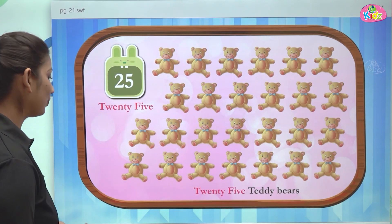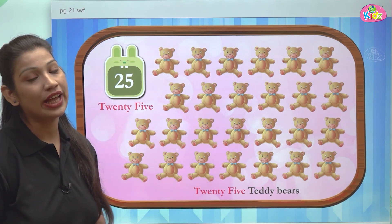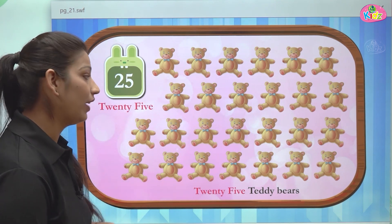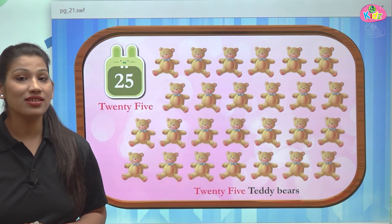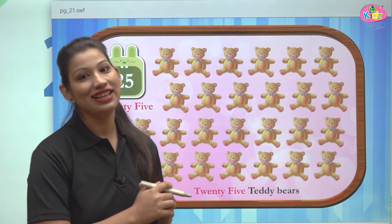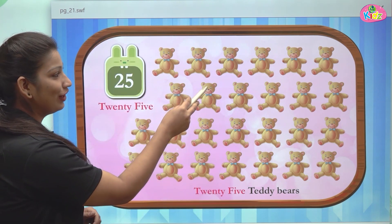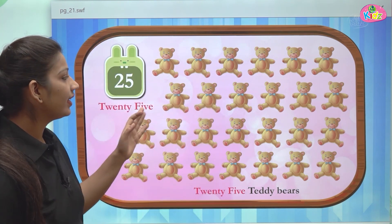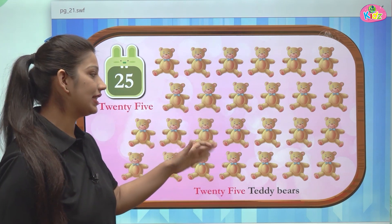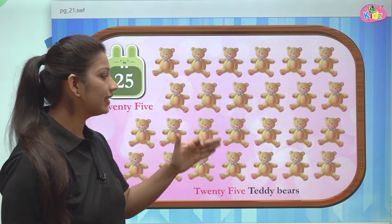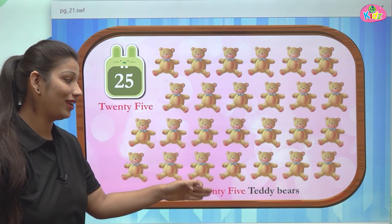This is number 25 — 25. And here we can see teddy bears. These teddy bears are 25 in number. Let us count: 1, 2, 3, 4, 5, 6, 7, 8, 9, 10, 11, 12, 13, 14, 15, 16, 17, 18, 19, 20, 21, 22, 23, 24...